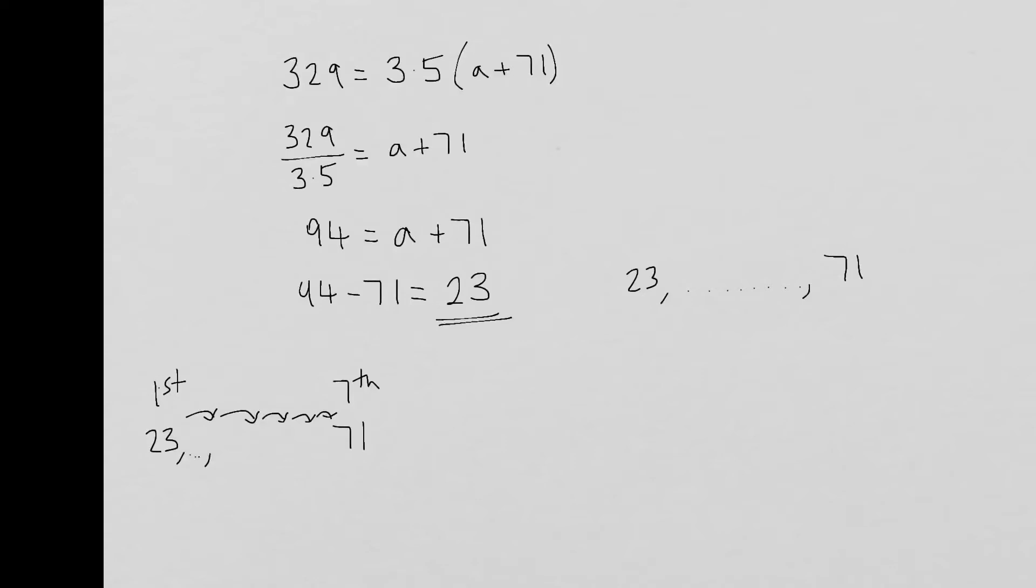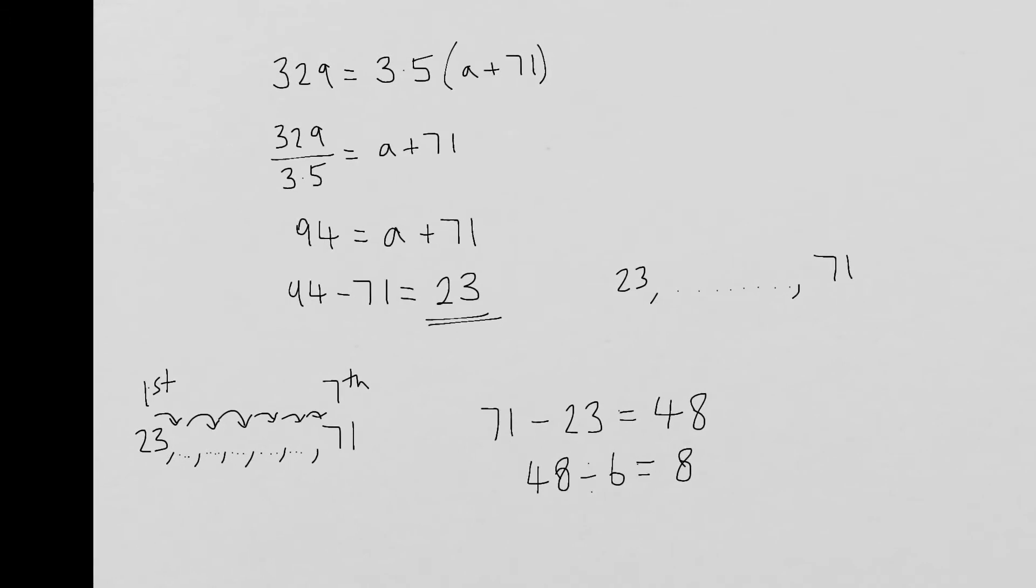So if the first term is this 23 and the seventh term is 71, that means that I've added a difference in total six times. So once to get to the second term, again for third, fourth, fifth, sixth, and then there we go. So that's the seventh there. So if I calculate the difference between these two numbers, so 71 take away the 23, that gives me 48. And if I divide that difference up six times, because we've added this difference six times, then we're going to get our answer of eight.